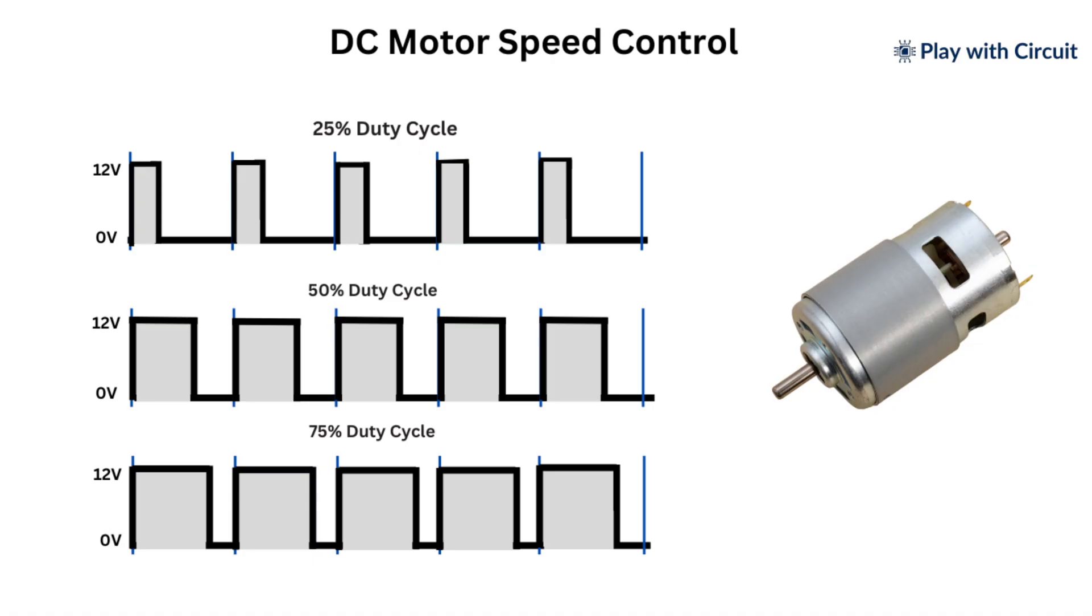In this technique, the average power provided to the motor is modified by delivering voltage in the sequence of pulses. The percentage of time the signal is in ON state within each pulse period is represented as the duty cycle.